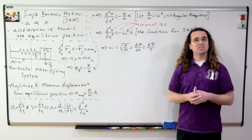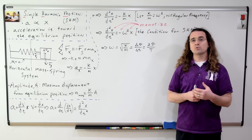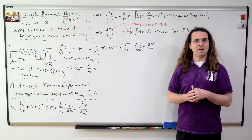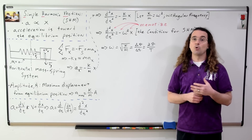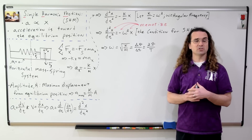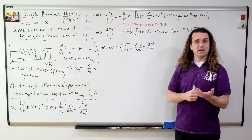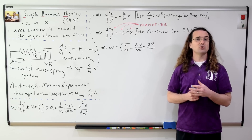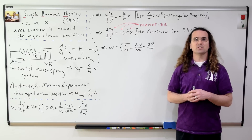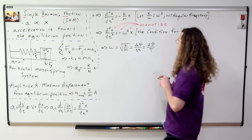For a mass-spring system, the angular frequency is equal to the square root of the spring constant divided by the mass. Omega is also equal to the change in angular position over change in time. And for one full cycle, the change in angular position is 2π radians and the change in time is the period, which is capital T.